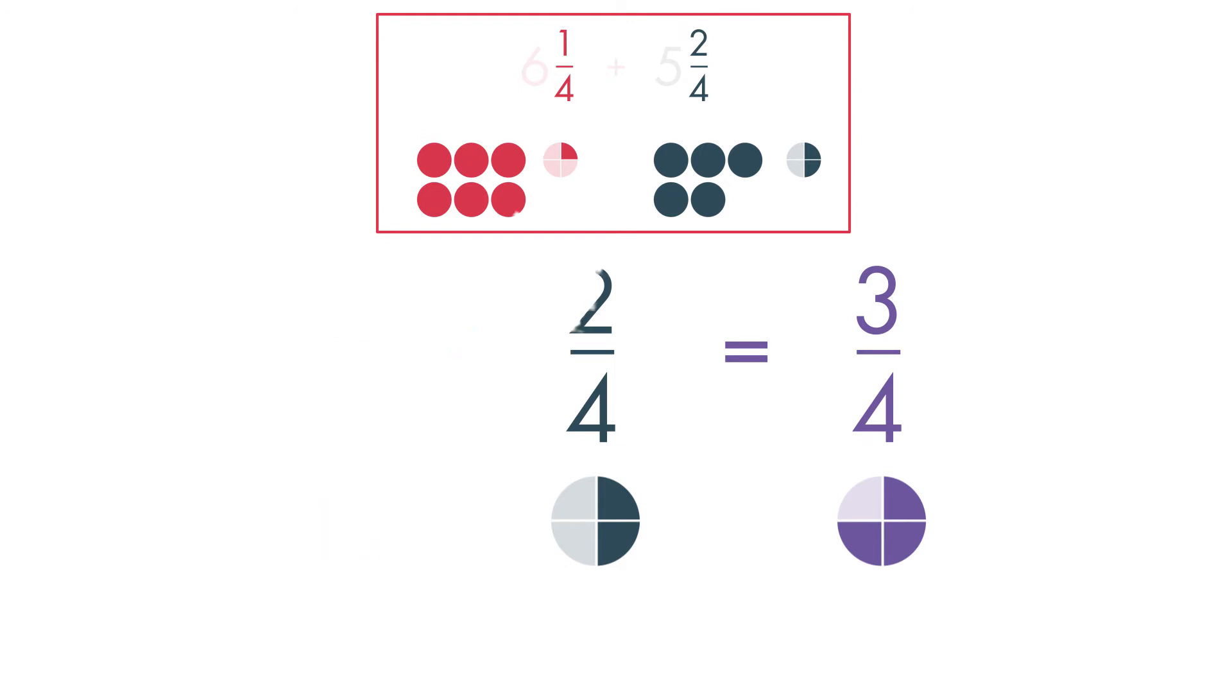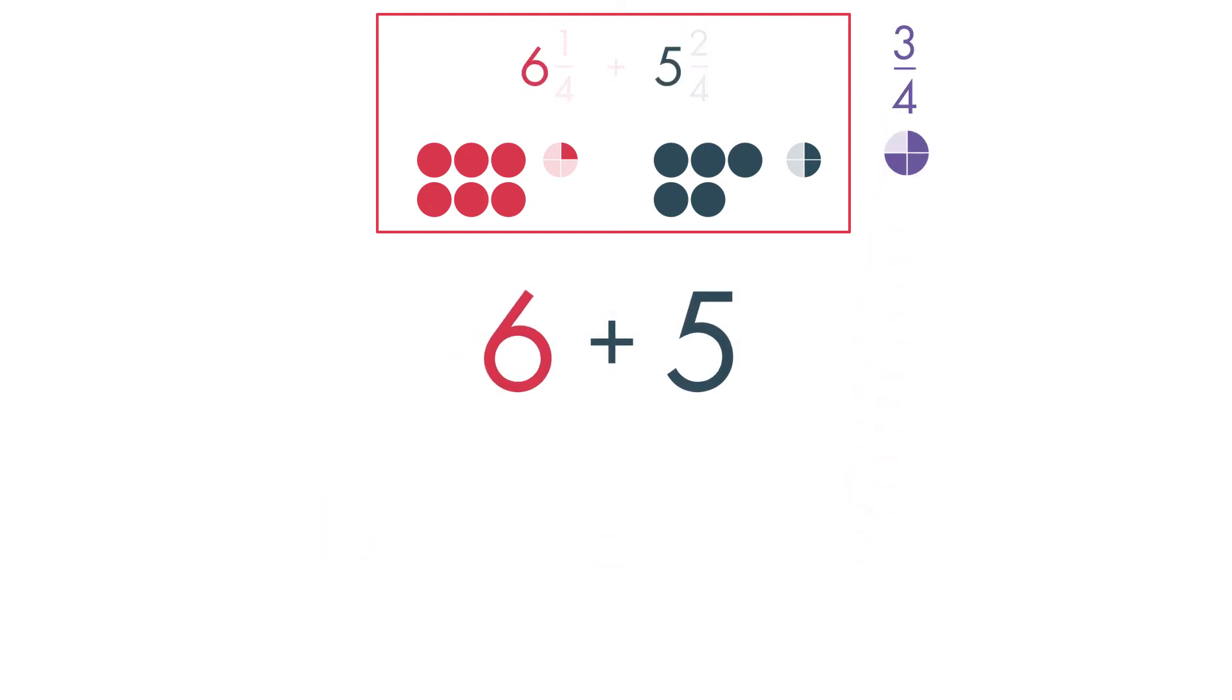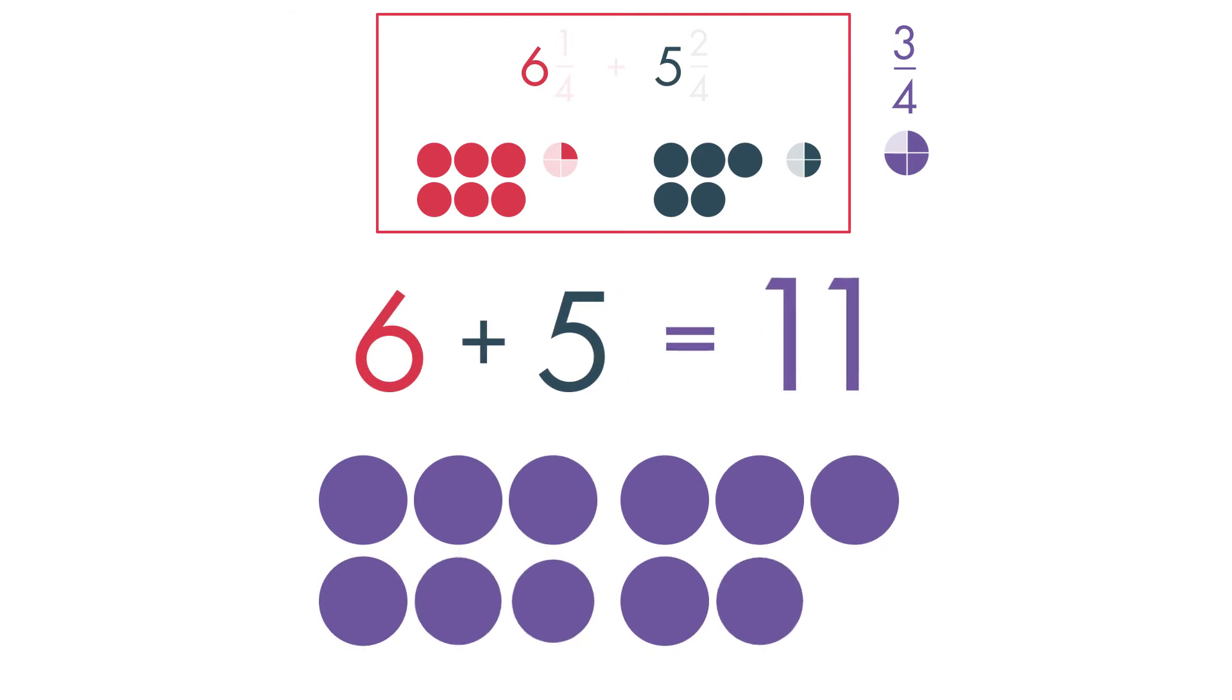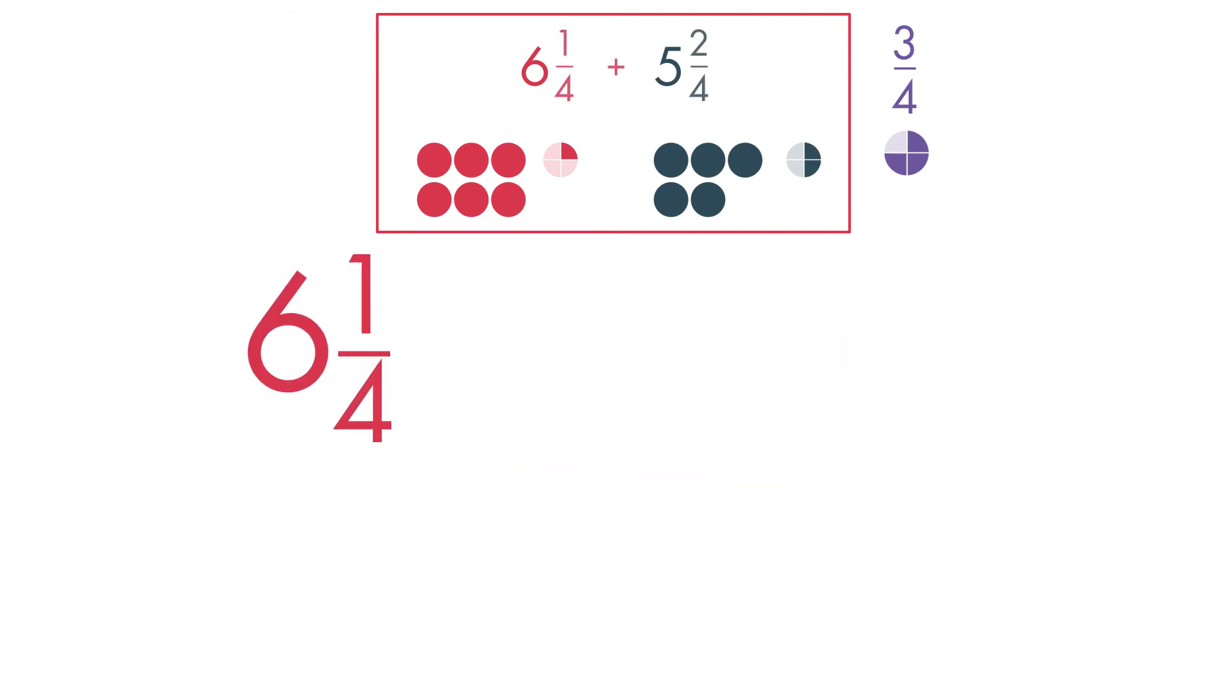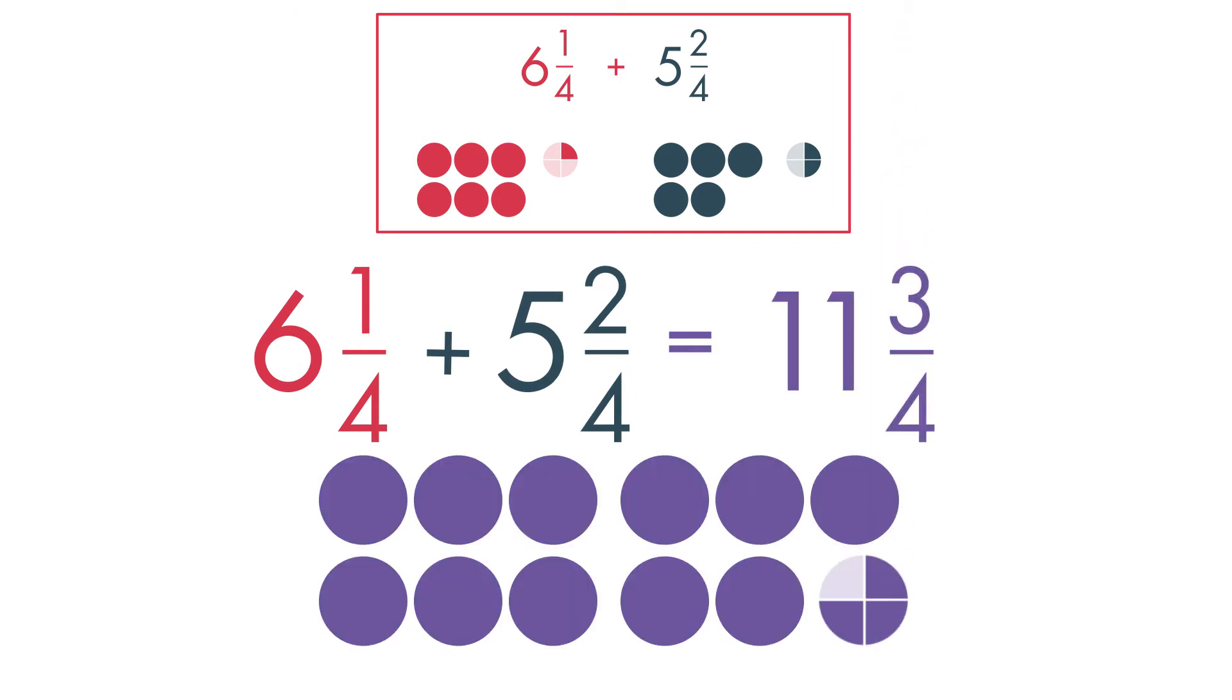Then add the whole numbers. Six plus five equals eleven. Six and one-fourth plus five and two-fourths equals eleven and three-fourths.